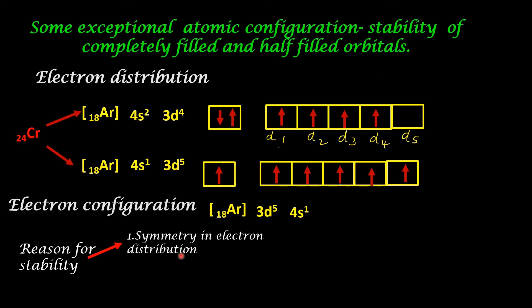One, symmetry in electron distribution. In the second case, we find it is more symmetrical than the first case. What is the benefit of having symmetry in distribution? All these electrons are revolving around the nucleus in different spatial arrangement. Therefore, there is less shielding effect. I have already posted a video on shielding effect. If you have not watched that video, please click the i button in order to watch that.